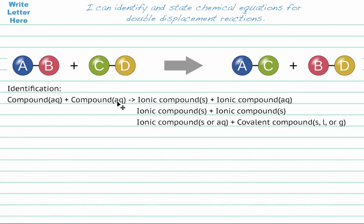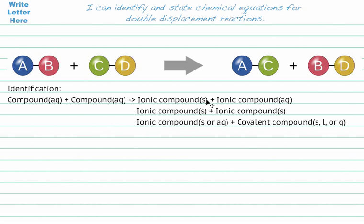When the reactants react with each other, we're looking for an ionic compound that is a solid — that would signify a precipitate. That's what you saw in the video when that white cloudy substance was made. A precipitate is shown by a solid. It can occur alongside another ionic compound that is soluble in water, or both products can be precipitates. As long as we have one precipitate, the reaction will happen. If we have no precipitates, it will not work.